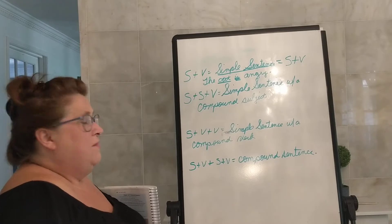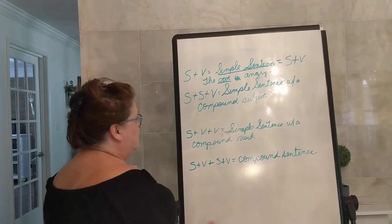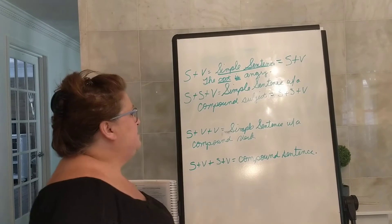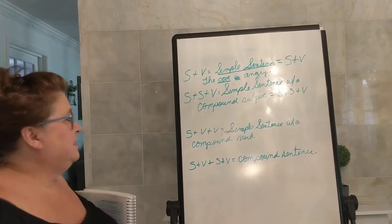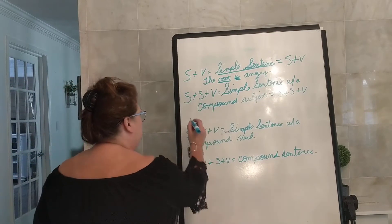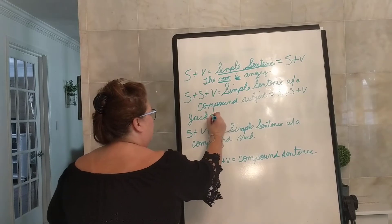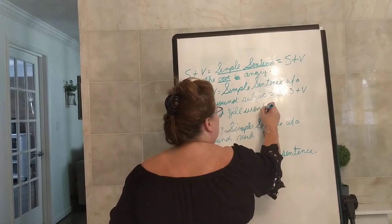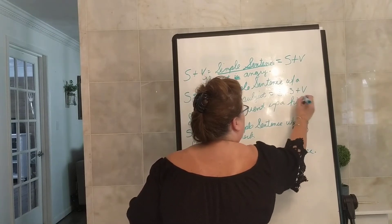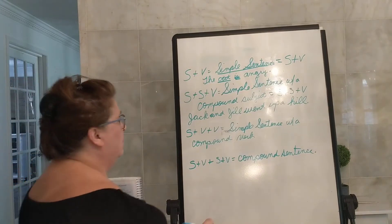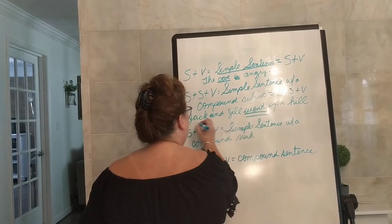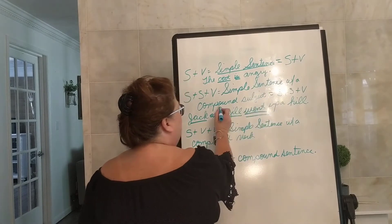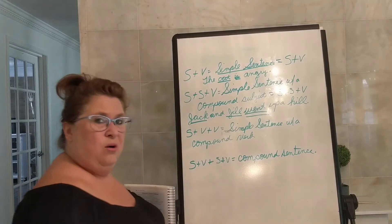Another kind of sentence is a simple sentence with a compound subject, which equals subject plus subject plus verb. An example would be 'Jack and Jill went up a hill.' Our verb is 'went.' Who or what went? Jack, Jill. So Jack and Jill is the compound subject — that is a simple sentence with a compound subject.